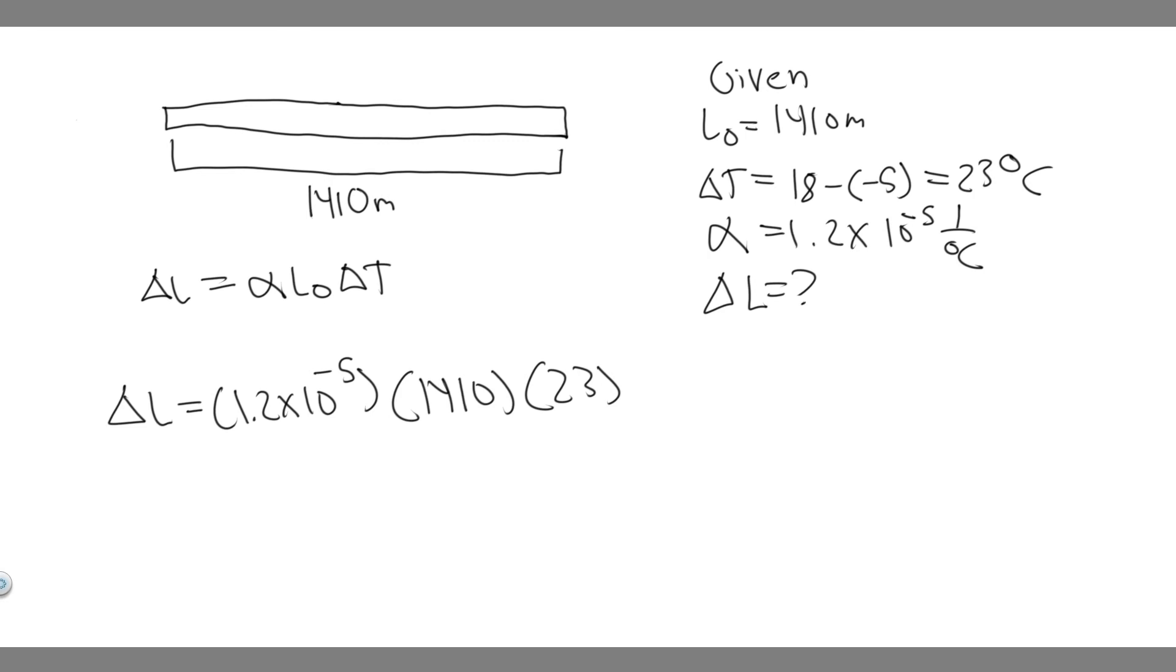So 1.2 times 10 to the minus 5, and then you're going to do times 1,410 and then times 23. And so you're going to find delta L, or the change in length, is 0.38916.